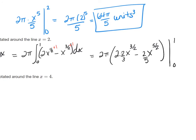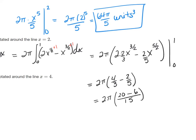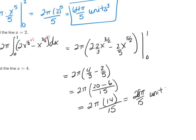Since x = 0 contributes nothing, evaluating at x = 1: 2π times (4/3 - 2/5). Finding the common denominator of 15: 20/15 - 6/15 = 14/15. So the answer is 2π times (14/15) = 28π/15 units cubed.